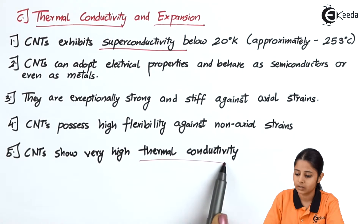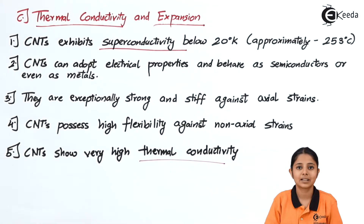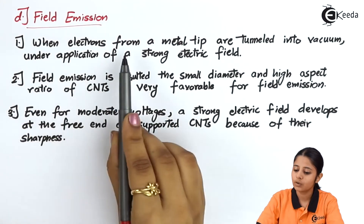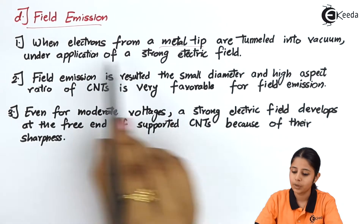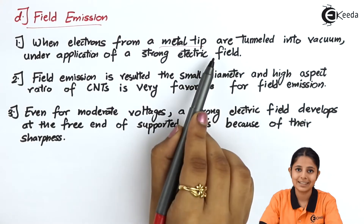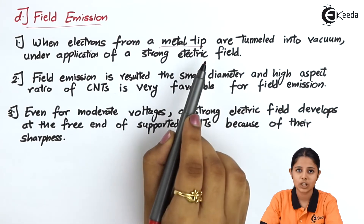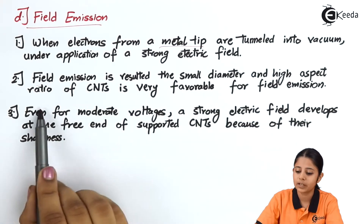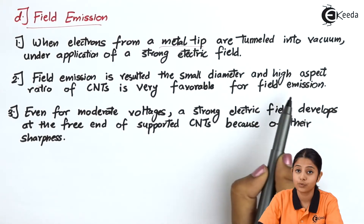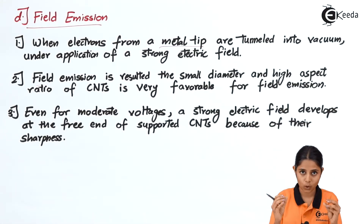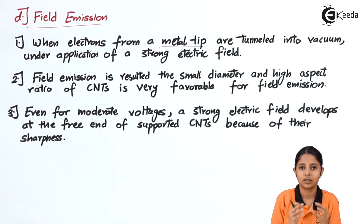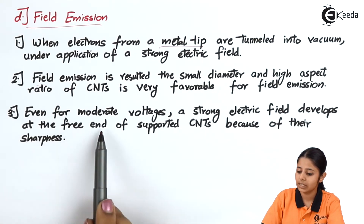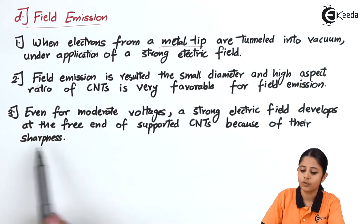CNTs show very high thermal conductivity — meaning they can conduct heat as well as electricity. Regarding field emission: when electrons from a metal tip are tunneled into vacuum under application of a strong electric field, that is known as field emission. The small diameter and high aspect ratio of carbon nanotubes make them very favorable for field emission. A strong electric field develops at the free end of supported carbon nanotubes because of their sharpness, even at moderate voltages.